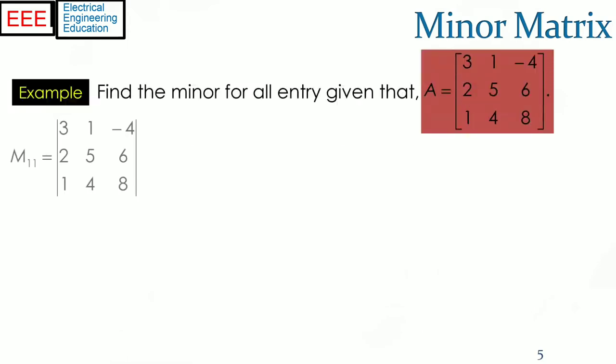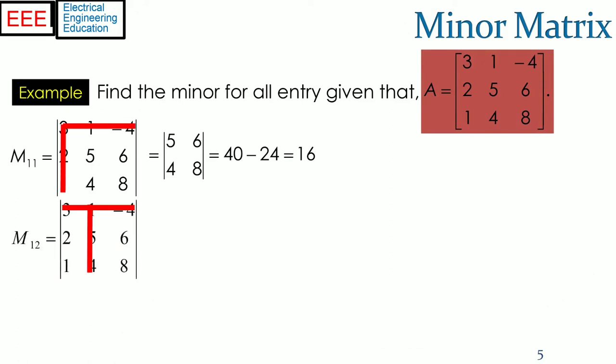An example to obtain the minor matrix of a given 3 by 3 matrix A is shown in a stepwise manner. For the minor matrix entry M_11, the first row and first column of the 3 by 3 matrix is deleted. The determinant of the remaining sub-matrix is 16. For M_12, the first row and second column is deleted, and the determinant is 10.